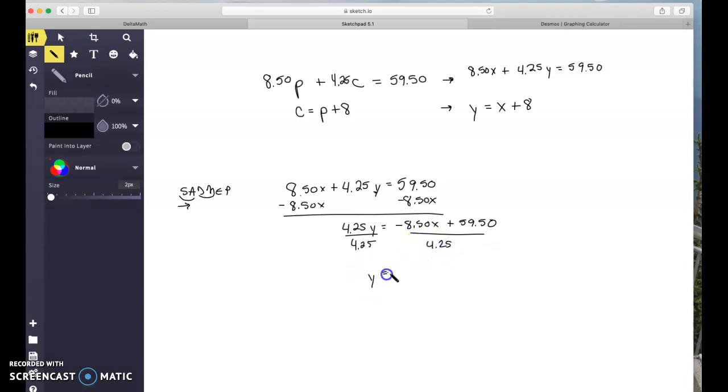So Y equals, let's see here. Negative 850 divided by 425 gives me, oh look at that, negative 2x. And 59, 50 divided by 425 gives me 14. Look how nice that worked out.